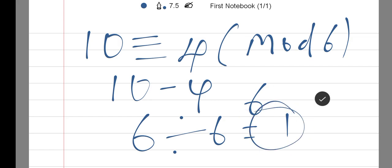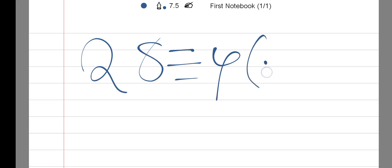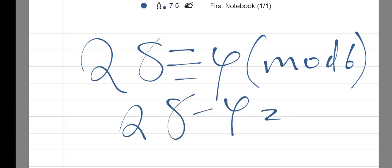So all we want is to find a number that is divisible. Here we have another example: what is 28 congruent 4 in mod 6? So 28 minus 4 gives us 24, and 24 is divisible by 6. As you know, 24 divided by 6 is 4.